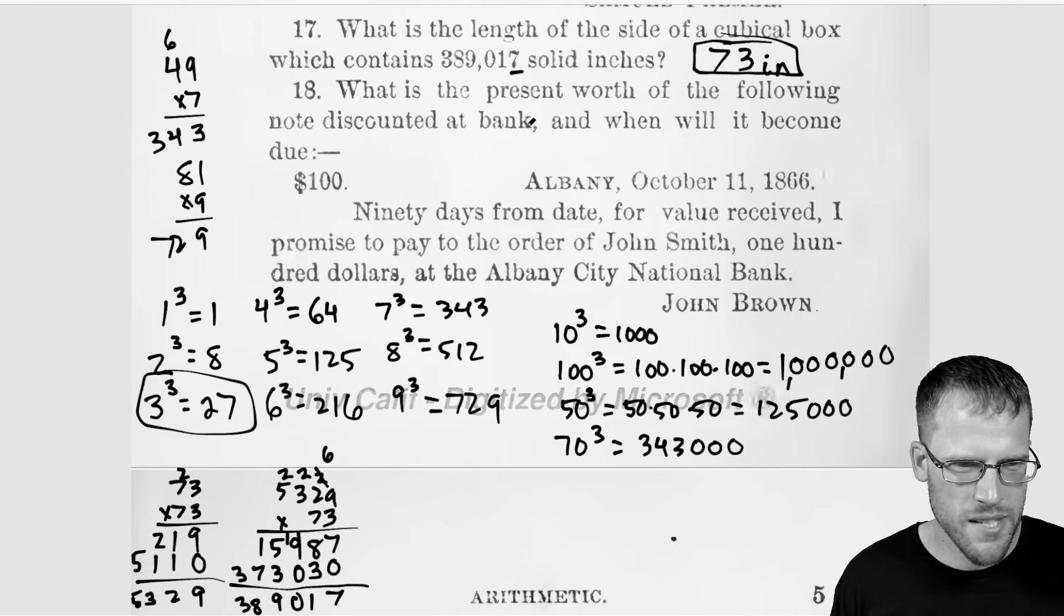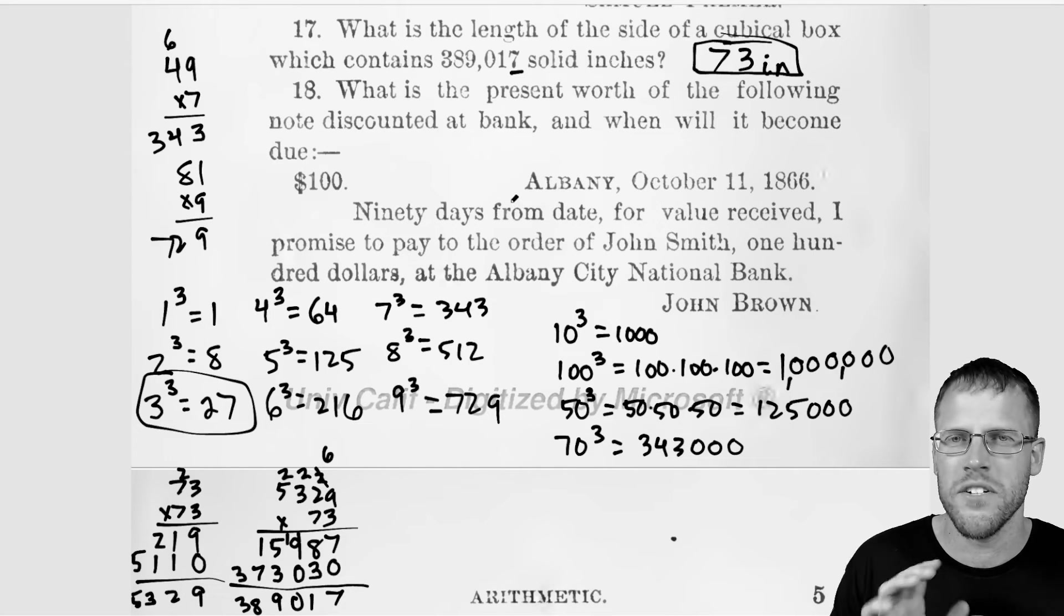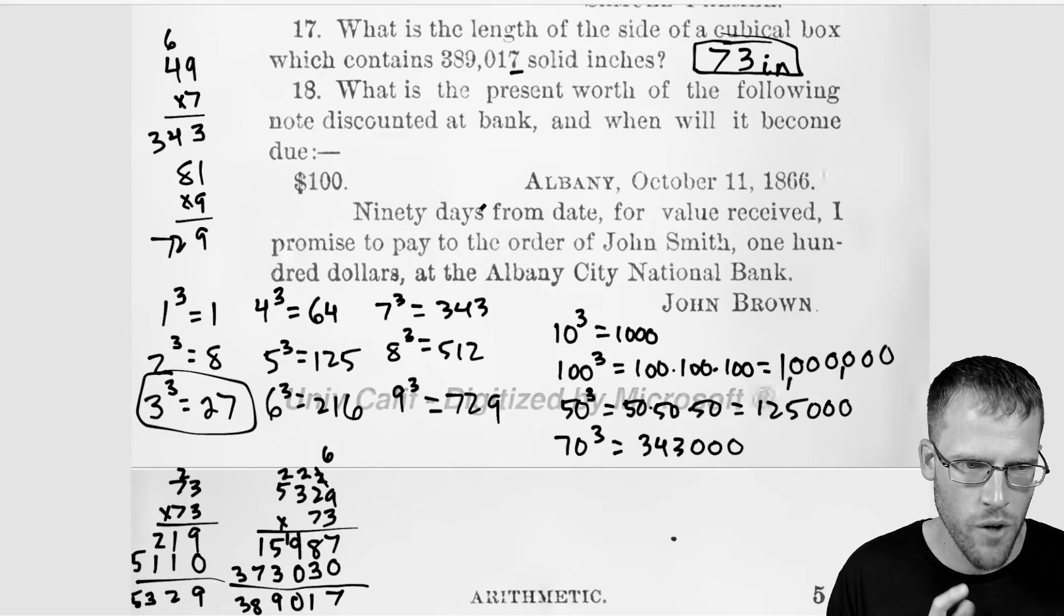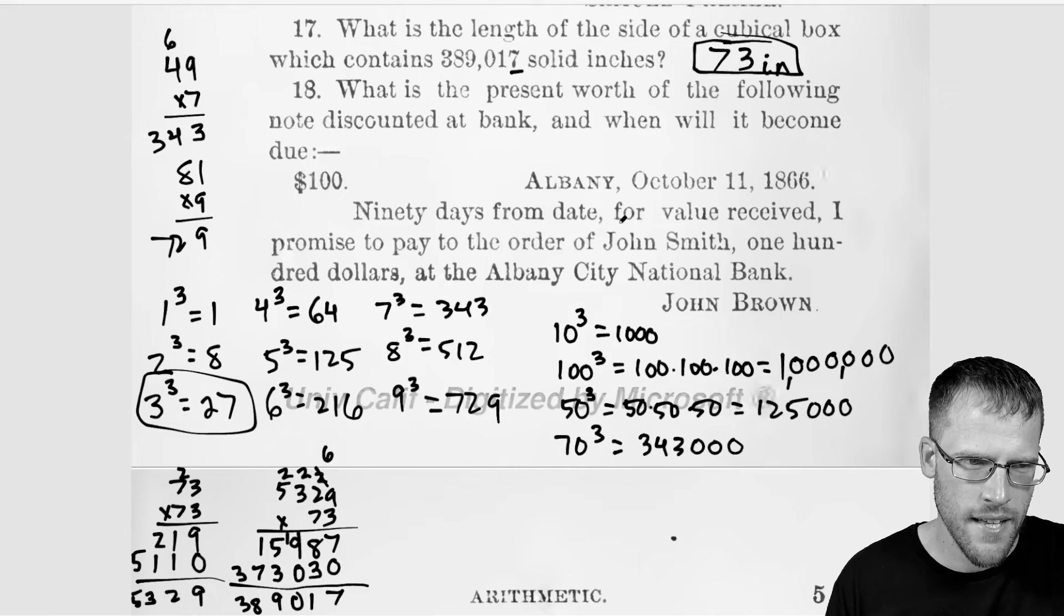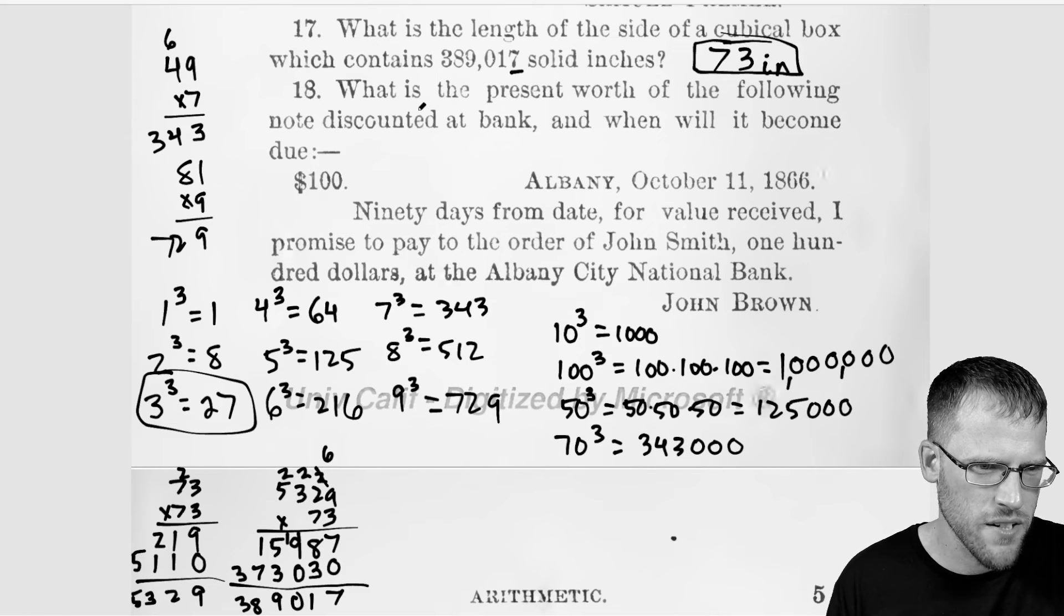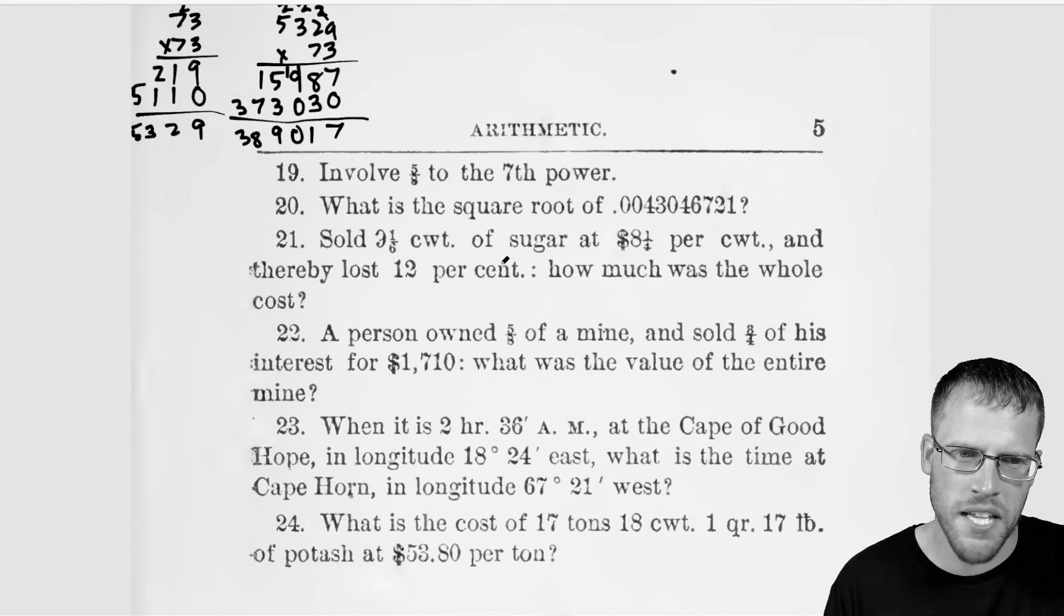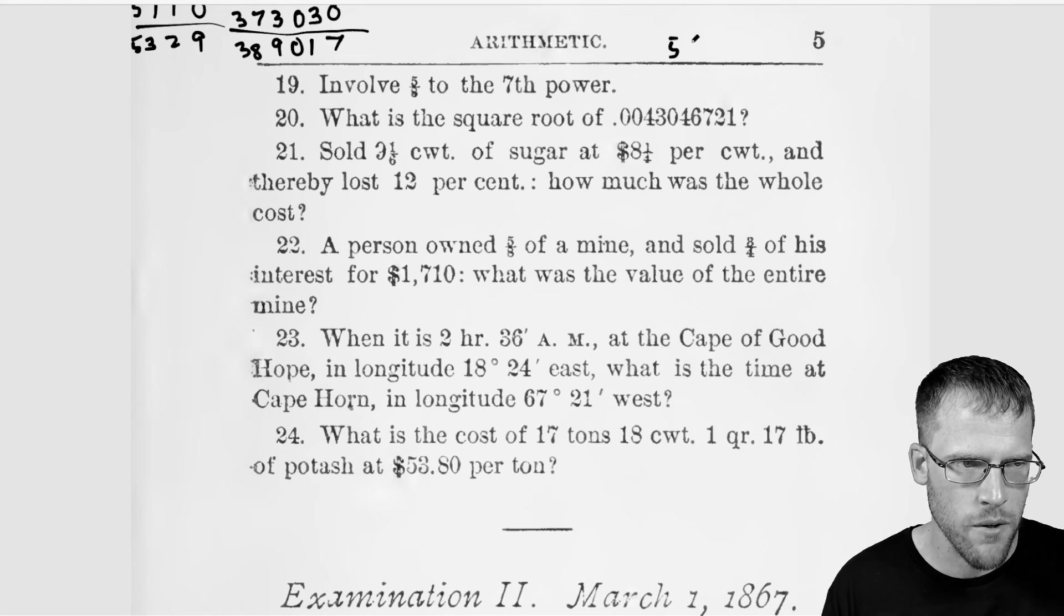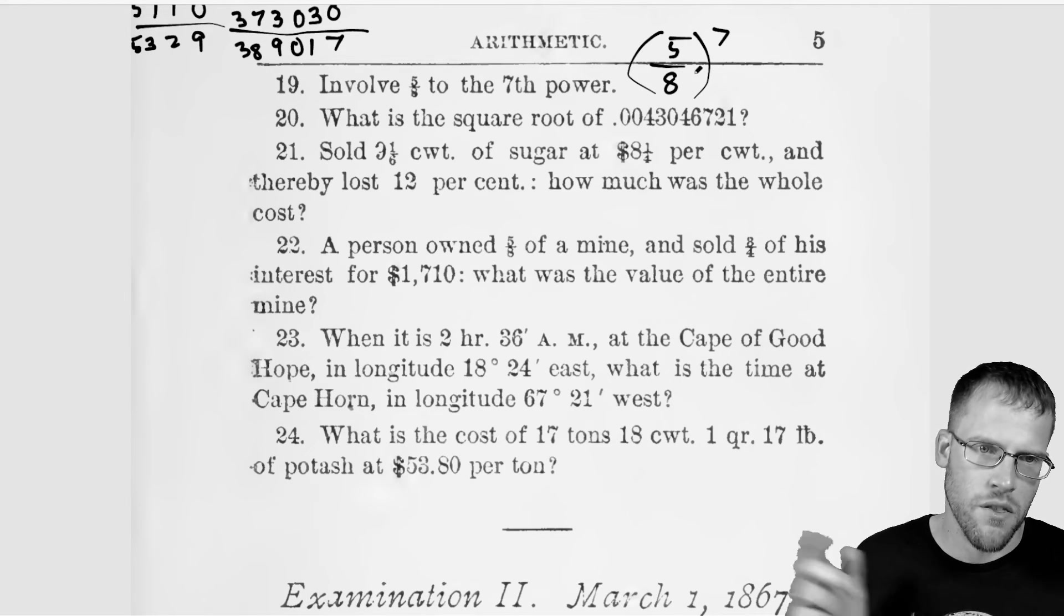So 18, what is the present worth of the following note discounted at the bank? When will it become due? Let's see, 90 days from date for value. The wording back then is just very different. English has definitely changed a bit, like the way they structure sentences. So this is just immediately throwing me off. I promise to pay to the order of John Smith, $100 at Albany City. Yeah. So this one, I would say here discounted, note discounted at the bank is just probably some basic arithmetic that I'm missing out on, but the language is what's throwing me off. So now let's see involve five eighths to the seventh power. That's an interesting way to phrase it. Five eighths to the seventh power. All right. So just multiply until you're tired is the theme for this. So just multiply.